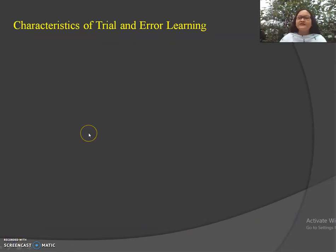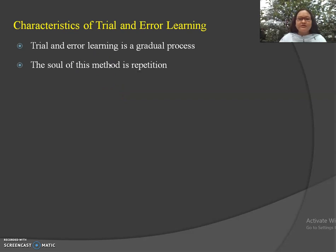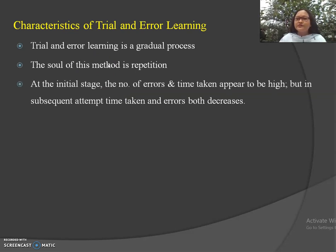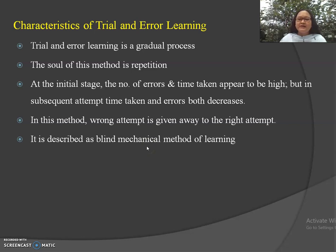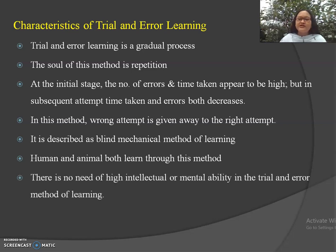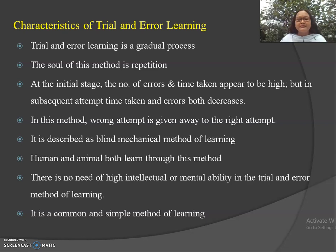The characteristics of trial and error learning: it is a gradual, very slow process. The soul of this method is repetition, as we have to attempt again and again. At the initial stage, the number of errors and time taken appear to be high, but in subsequent attempts, time taken and errors both decrease. Wrong attempts give way to the right attempt. It is described as a blind mechanical method of learning. Both humans and animals learn through this method, and there is no need of high intellectual or mental ability. It is a common and simple method of learning.